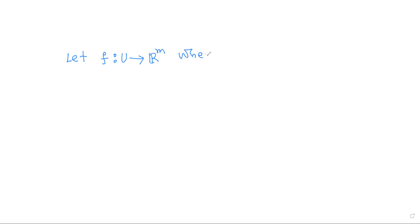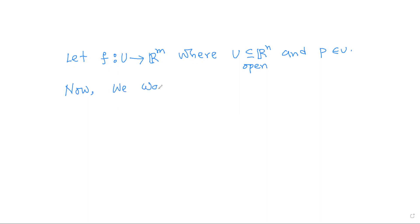Today's video will generalize the concept of the differential of a function from Rn to Rm. Let f be a function from U to Rm, where U is an open subset of Rn, and let p belong to U. We want to define the derivative of f at the point p.